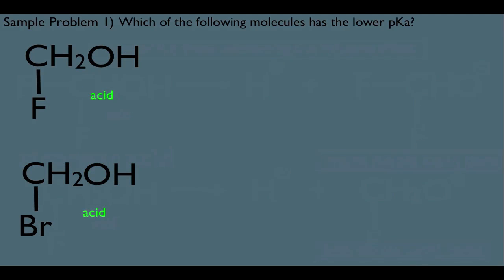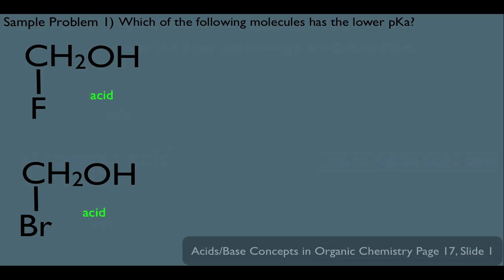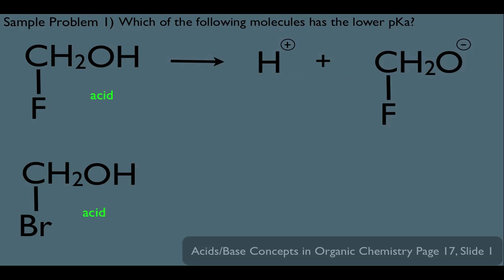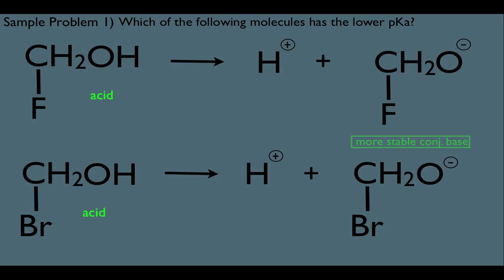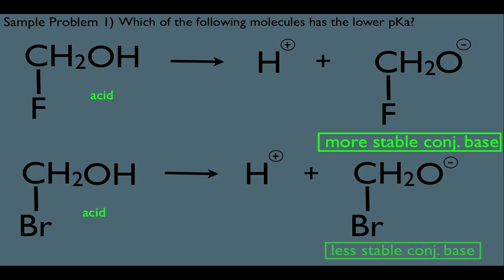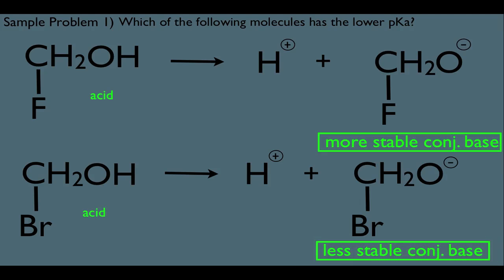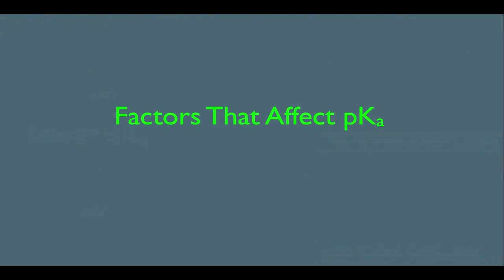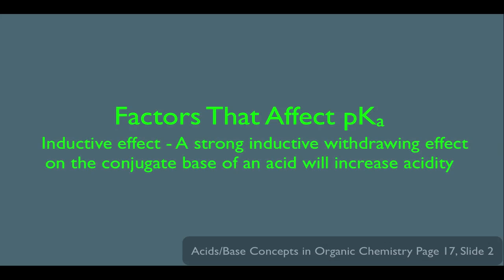Let's look at a sample problem: which of the following molecules has the lower pKa? Looking at the conjugate bases, the top conjugate base is more stable and the bottom is less stable. F is more electronegative than Br, and the more electronegative the atom, the stronger the withdrawing inductive effect. Therefore, the top acid has the lower pKa — it is simply the stronger acid. In summary, one factor affecting pKa is the inductive effect: a strong inductive withdrawing effect on the conjugate base of an acid will increase acidity.